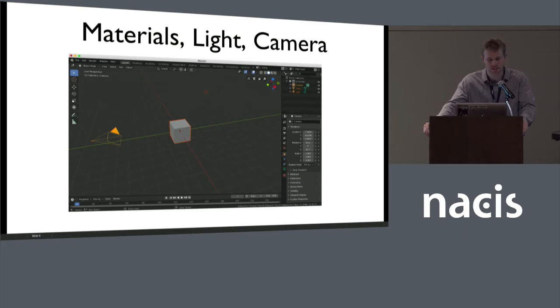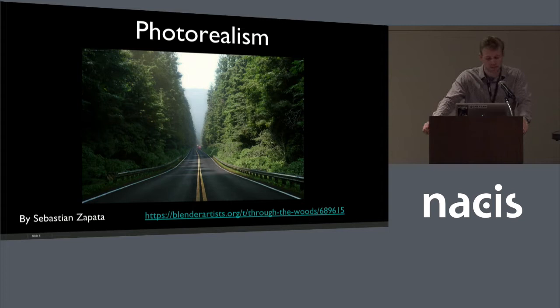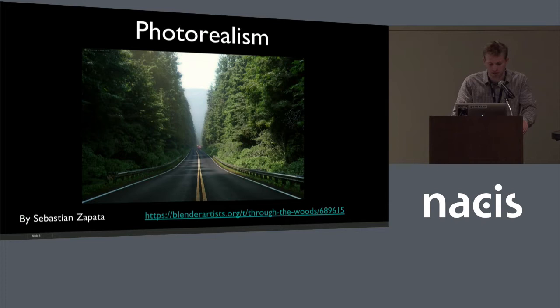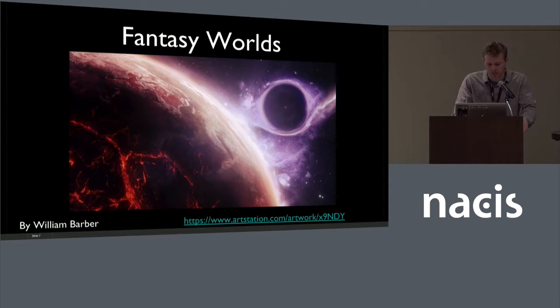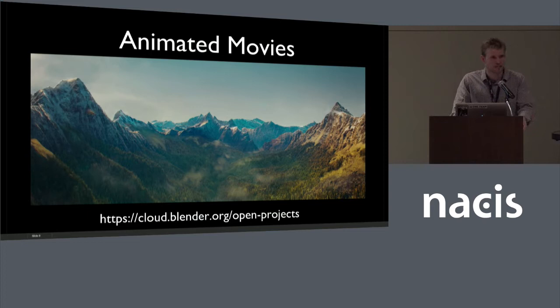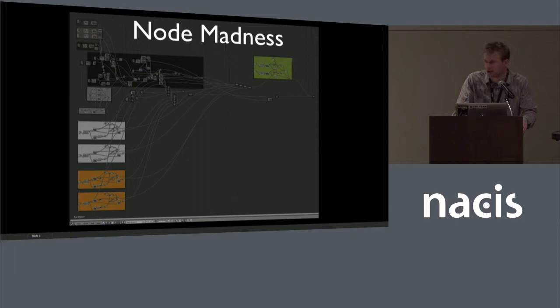But people do some really incredible things with Blender. This is not a photo — this is 3D models of trees and lots of complicated light sources and material composition. People make fantasy worlds; it's not all photo realism. The Blender Foundation puts out Pixar-esque shorts every year, completely open source, and those are really inspiring. But kind of scary — pretty complicated. There are about 200 nodes right there, so a little discouraging.